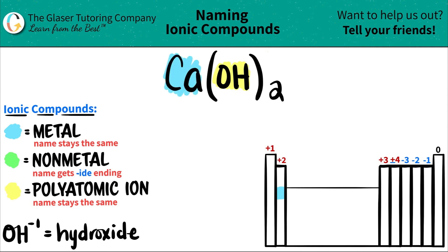Now all elements are accounted for. Let's start naming. The metal name, calcium is going to come first because it's literally first in the compound. And that name always stays exactly the same. So calcium will just stay calcium.